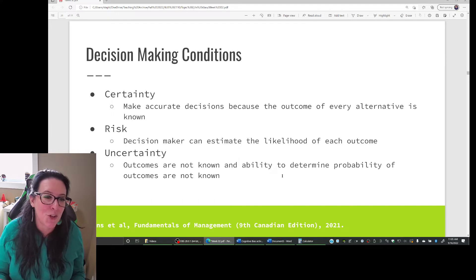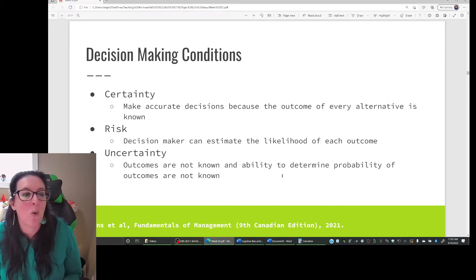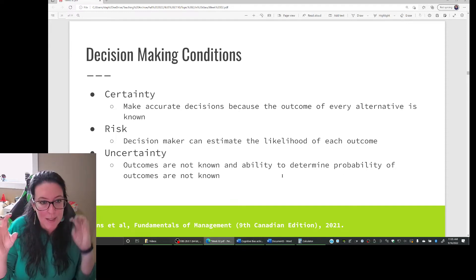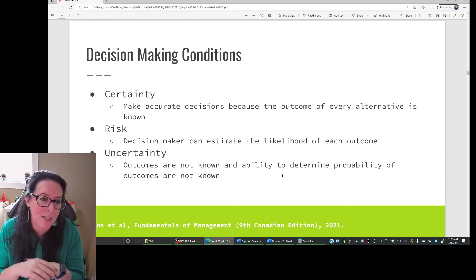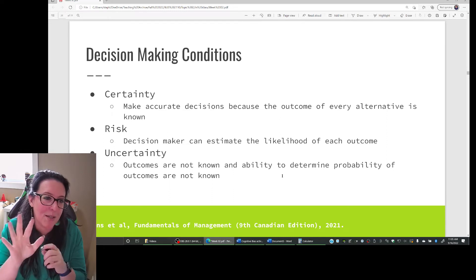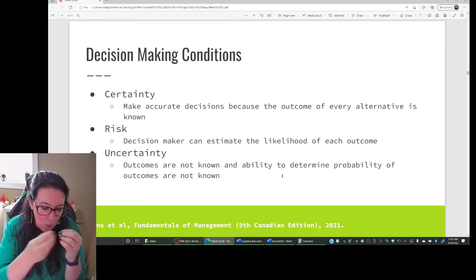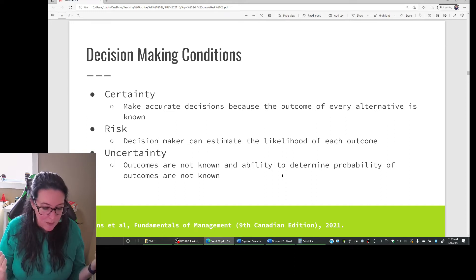And if we then have certainty, which is we know that if the price goes up, we know we'll make more money. So we can look at risk and we can look at certainty. If we produce more, 20% chance the market price will go up. That's the risk. The certainty is we know the outcome that if the price goes up and we produce more, we know we'll make more money.